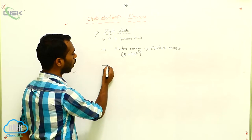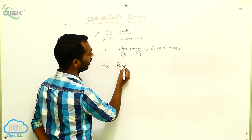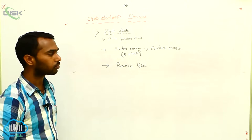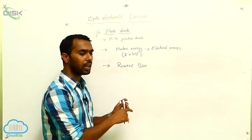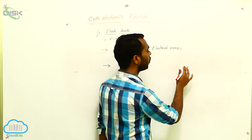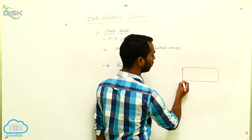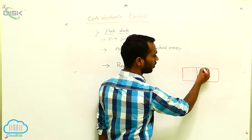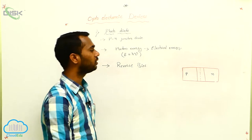In which bias do we operate the photodiode? We have forward and reverse bias. We have to operate this one in reverse bias. Here I am drawing a circuit diagram to understand the photodiode. You take a P part and N part — a P-N junction diode. This is the junction and this one is the depletion layer. This part is P and this part is N.